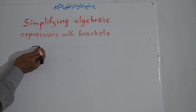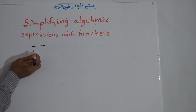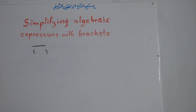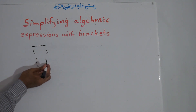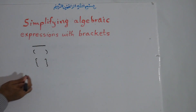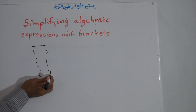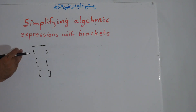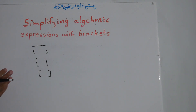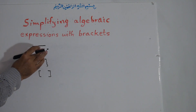We have four kinds of brackets: the bar bracket, the small bracket (also called parentheses or round bracket), the medium bracket (also called braces or curly bracket), and the big bracket (also called square bracket). The first one we seldom use, but these three brackets we always use. When we want to simplify brackets, we start from the inside — from the smaller bracket, then medium, then large.